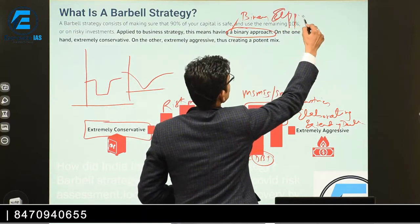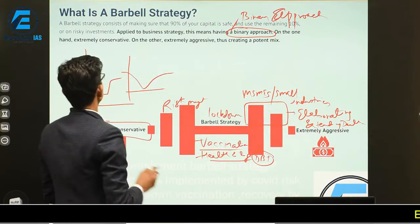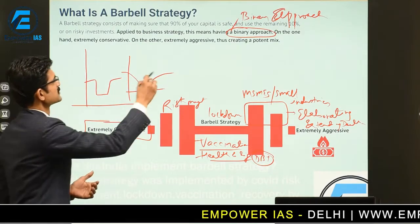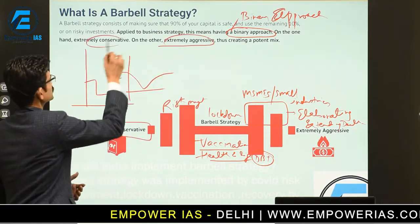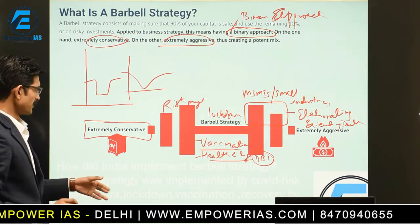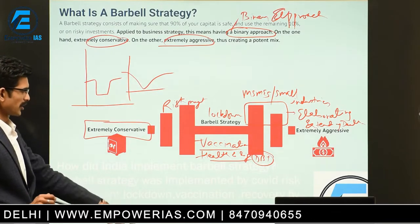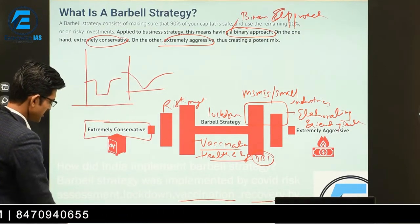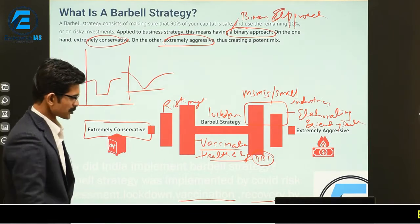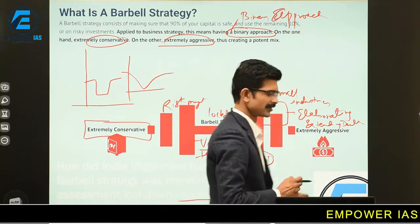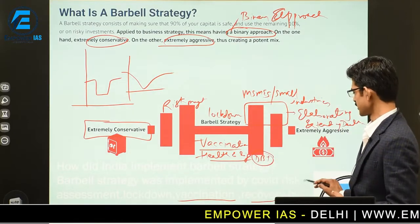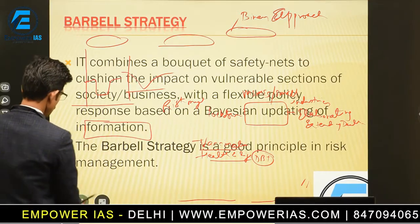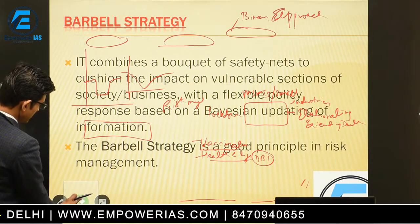So it is called a binary approach — it is neither very conservative nor very aggressive, but it is a balanced approach. That is why it is called the barbell strategy. The barbell strategy was prepared during the lockdown by making vaccination, recovery through DBT, loans to MSMEs, and postponing the deadlines — very important from your prelims as well as mains point of view. Now coming to the next slide, we see how development is scattered by the government under various programs.